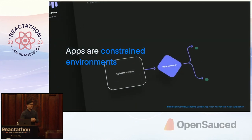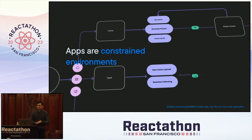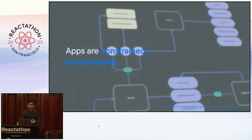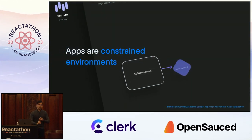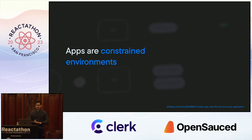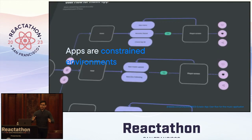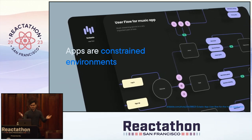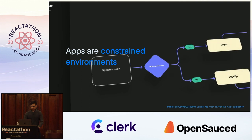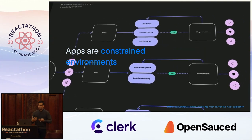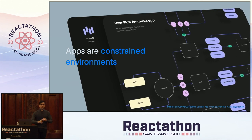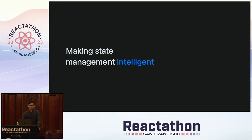So let's get back to state. The realization I've had — and probably others have had too — is that applications, unlike the real world, are actually really constrained environments. We're basically building forms, building products, but it all boils down to: we have an application constrained by the code base. We have buttons, inputs, and all of these sorts of things. We have a discrete, finite list of things that a user could do or that could happen throughout the app. So how could we use this to our advantage and actually make state management intelligent?